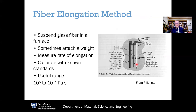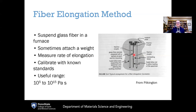Going to lower temperatures or higher viscosities, the fiber elongation method suspends a glass fiber in a furnace, allowing it to flow under its own weight, or a weight is attached to the bottom. The rate of elongation of the fiber at a particular temperature is measured, and after calibrating with known standards, you can get the viscosity — the faster the rate of deformation, the lower the viscosity. This is a quick and dirty method covering a pretty wide range of viscosities and fairly easy to do, but it is lacking in precision. Other methods give much more precise viscosity values, so this is mostly used as a guide.